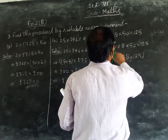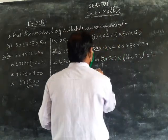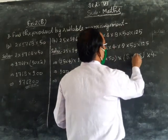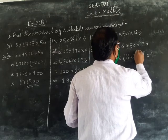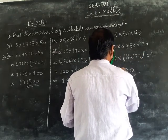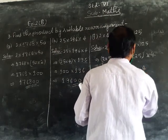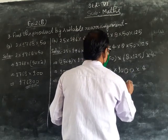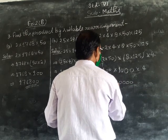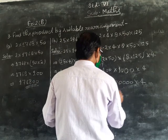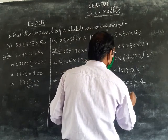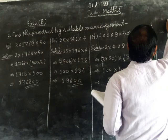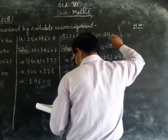125 and 8, so this becomes 125 multiply by 8 equals 1000 multiply by 4, which gives us 4000. This is the answer.